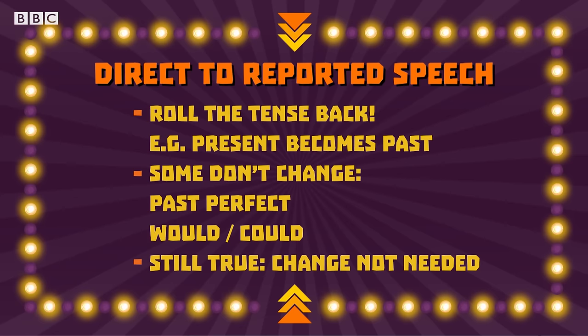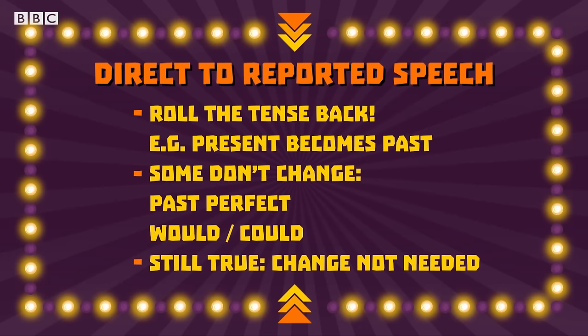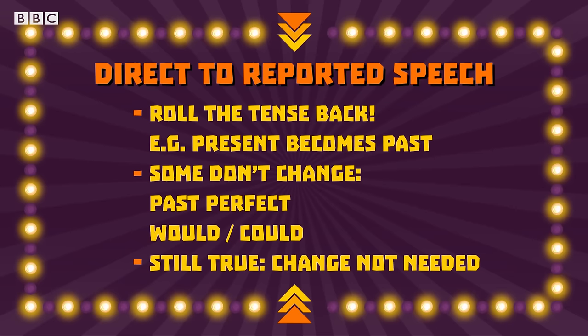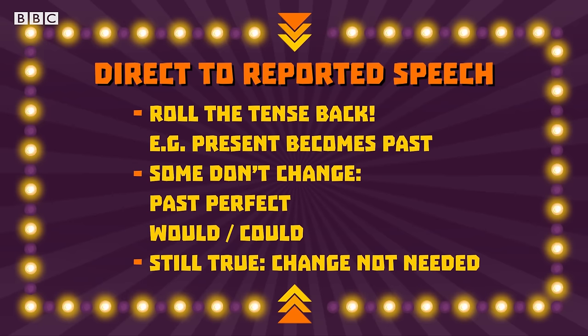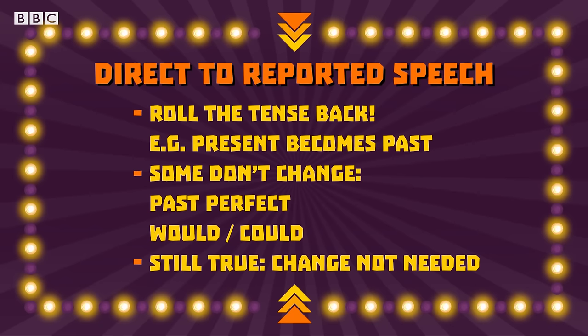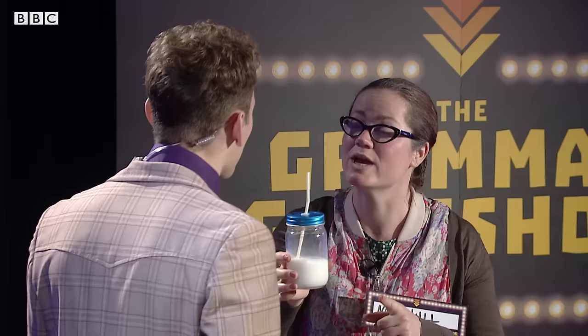That's absolutely right! When changing speech from direct to reported, remember that the tense of the direct speech should be rolled back one step towards the past. For example, present becomes past and past becomes past perfect. However, there are one or two exceptions. Firstly, some tenses and verb types don't change, such as the past perfect and verbs like would and could. Secondly, if something which was said is still true at the time of reporting, no tense change is necessary. This is also true if the reporting verb say or tell is in the present tense. Well done! You get eleven point two points! Before I forget, I brought you some milk. Nana Will, you're not supposed to come up — drink up, dear, Nana knows best.